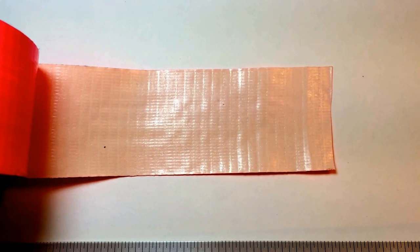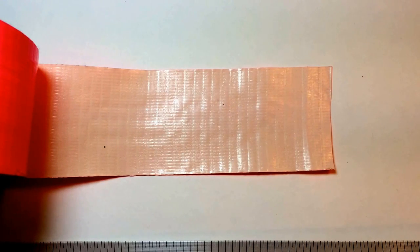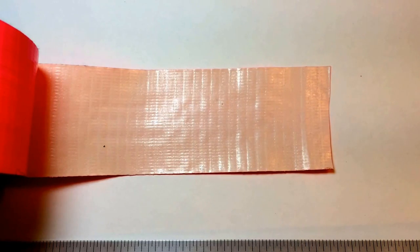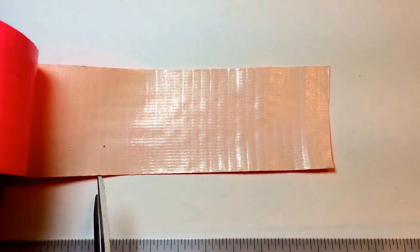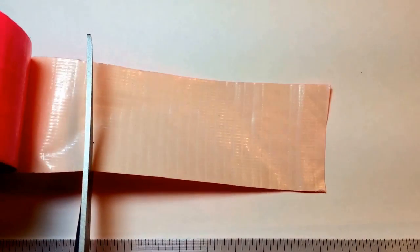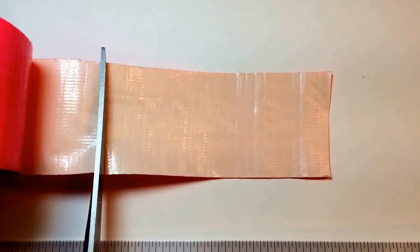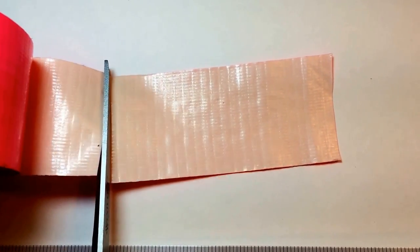The first step is to pick your color. The second step is to cut two lengths of duct tape that are about four inches long. If you use non-stick scissors, it works a whole lot easier.